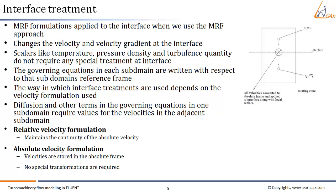First, let us see how the interface is treated in the relative velocity formulation. The interface is like a boundary between two subdomains. The diffusion and other terms in the governing equations in one subdomain require values for the velocities in the adjacent subdomain. What ANSYS Fluent does is maintain the continuity of the absolute velocity v̄ to provide correct neighboring values. When using the relative velocity formulation, velocities in each subdomain are computed relative to the motion of the subdomain, and velocities and velocity gradients are converted from the moving reference frame to the absolute inertial frame using the transformation equations.